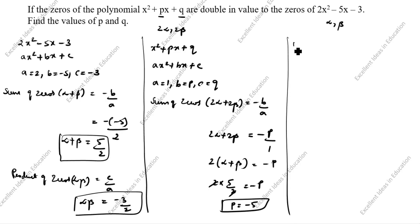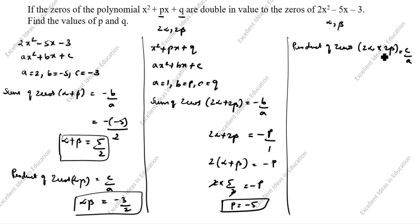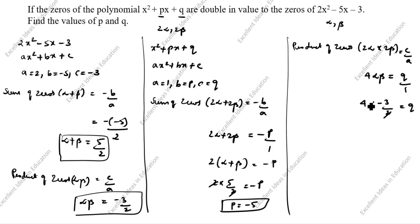Next, product of zeros: 2 alpha into 2 beta equals c by a. That is 4 alpha beta equals q by 1. What is c? c is q, a is 1. So 4 into alpha beta equals q. Alpha beta is minus 3 by 2, so 4 into minus 3 by 2 equals q. That gives minus 12 by 2, so minus 6 equals q.